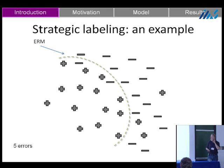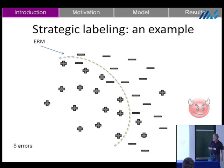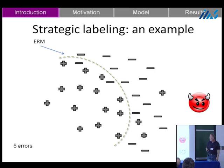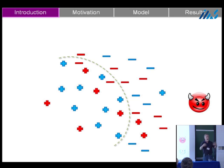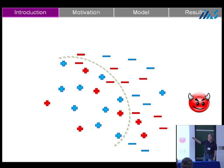Now we ask: what if instead of simply being given all the points, we have agents controlling those points and giving information to the machine learning algorithm? We've got a red agent and a blue agent. The red agent knows about some points in the plane, the blue agent knows about others. The machine learning algorithm asks the agents to provide the information it needs to do classification. If they're truthful, the ERM has five errors — exactly what we saw.